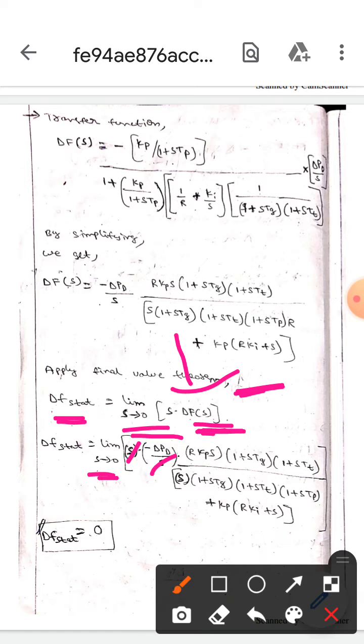In the place of s we will put 0. Then we get delta f stat equals 0.